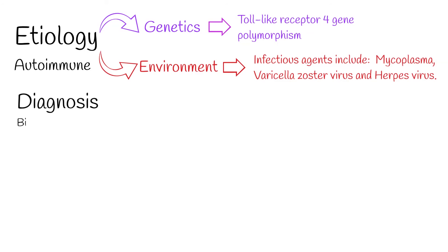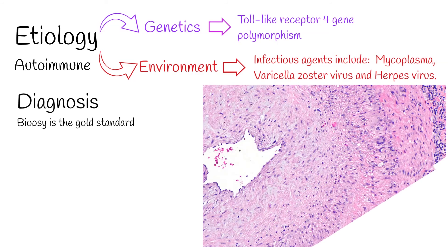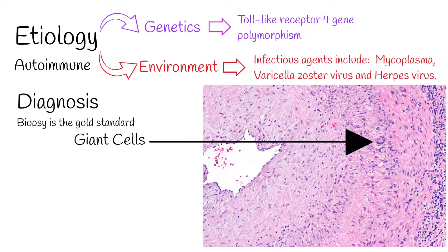Diagnosis: biopsy and histopathology is the gold standard for the diagnosis of giant cell arteritis. Microscopically, giant cells are seen infiltrating the tissue — that's why it is called giant cell arteritis.